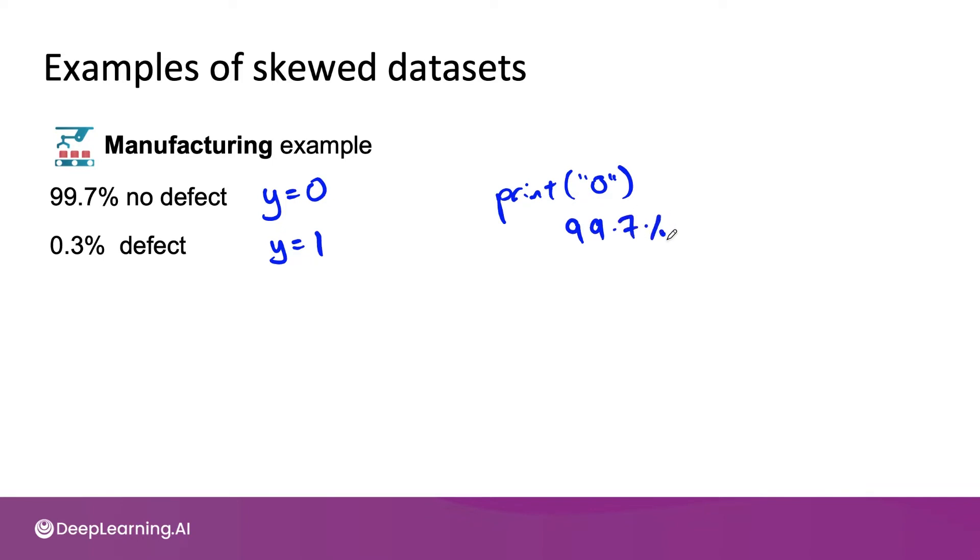Or medical diagnosis, which was the example we went through in an earlier video. If 99 percent of patients don't have a disease, then an algorithm that predicts no one ever has a disease will have 99 percent accuracy.